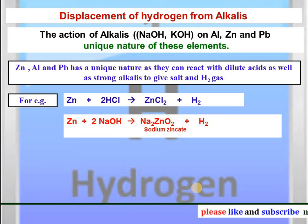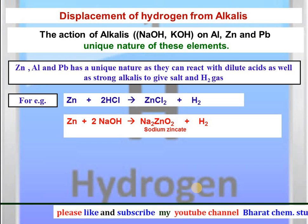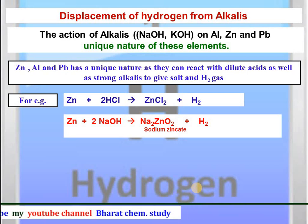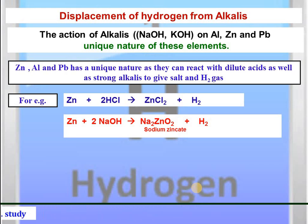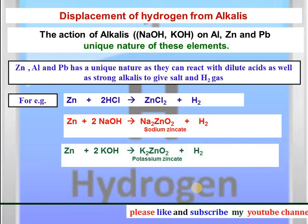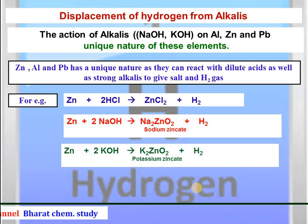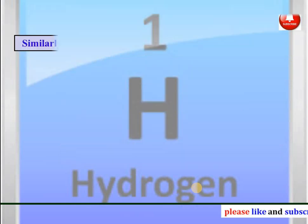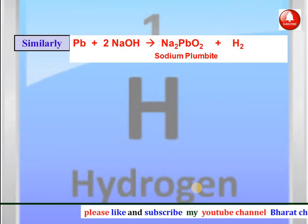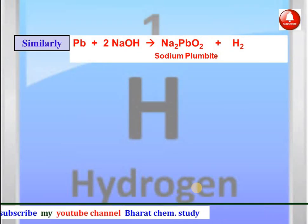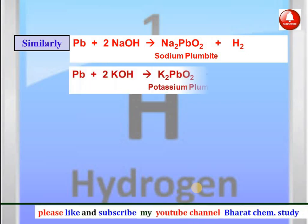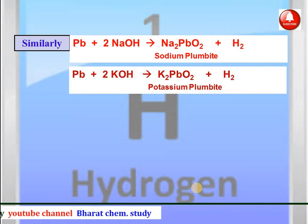This is the unique property of zinc, aluminium, and lead — that they can react with acids as well as with alkalis to give a salt and hydrogen gas. Zinc reacts with potassium hydroxide to give potassium zincate and hydrogen gas. Lead reacts with NaOH to give sodium plumbite and hydrogen gas. Lead can also react with KOH to give potassium plumbite and hydrogen gas.